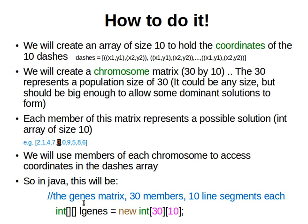In Java, it will look like this to create the genes matrix or the population or the chromosome matrix: 30 members, 10 line segments each. Now, in the next video, we will explain how we can evolve the population, i.e., how we can change it.